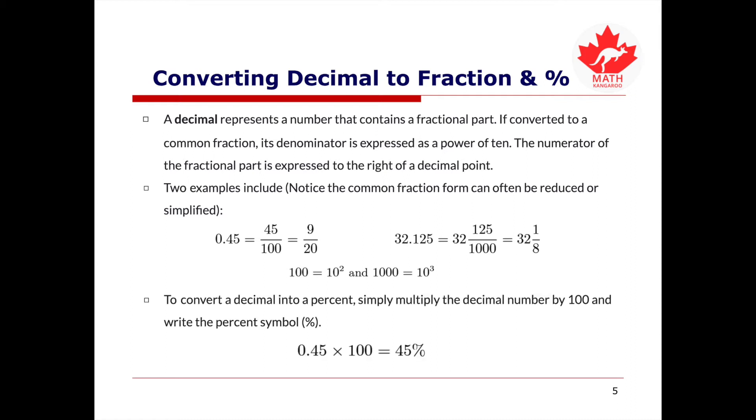To convert a decimal into a percent, we simply multiply the decimal number by 100 and write the percent symbol behind it. For example, if we have 0.45, the first step is we want to multiply 0.45 by 100, and then we add a percent symbol behind it, because percent is basically saying parts per hundred.